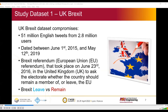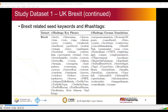The UK Brexit dataset comprises 51 million tweets from 2.8 million users, dated between June 1, 2015 and May 12, 2019. It's about the Brexit referendum which took place on June 23, 2016 in the United Kingdom, where they asked the electorate whether the country should remain as a member of or leave the EU. Brexit has two sides: leave versus remain. To gather this information, we used seed keywords and hashtags shown in this table, and we collected and purchased the data from Twitter.